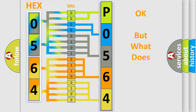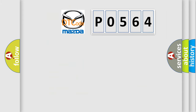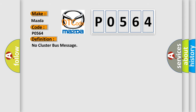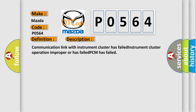We now know how the diagnostic tool translates received information into a more comprehensible format. The number itself does not make sense if we cannot assign meaning to what it actually expresses. So, what does the diagnostic trouble code P0564 interpret specifically for Mazda car manufacturers? The basic definition is: No cluster bus message. Communication link with instrument cluster has failed. Instrument cluster operation is improper or has failed. PCM has failed.